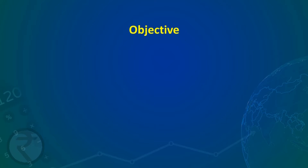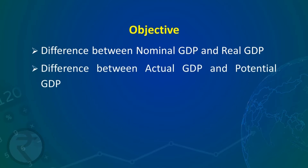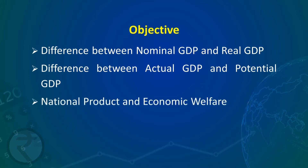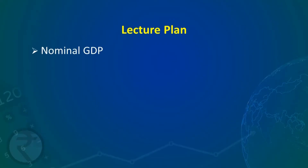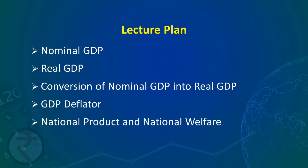The objective of this lecture is to know the difference between nominal GDP and real GDP, difference between actual GDP and potential GDP, and what is the relationship between national product and economic welfare. This lecture includes explanation of nominal gross domestic product, real gross domestic product, conversion of nominal GDP into real GDP, GDP deflator, national product, and economic welfare.